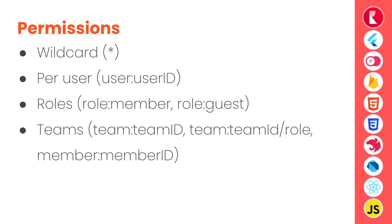Next, user colon user ID. If you specify a permission as user:userID, this means that only the user with that particular ID will have access to that resource. Next, roles — these are roles defined by AppWrite. Role 'members' means anyone who has successfully logged in or has an active session can access it. Role 'guest' means someone who doesn't have a session — role 'guest' does not mean public access; you should use the wildcard asterisk for public access.